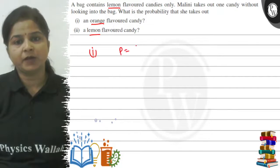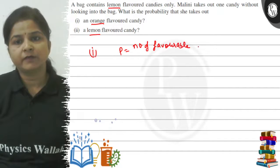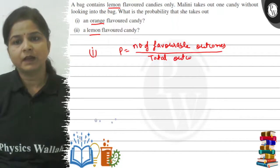First of all, the probability formula is number of favorable outcomes upon total outcomes. This is the ratio which we call the probability.